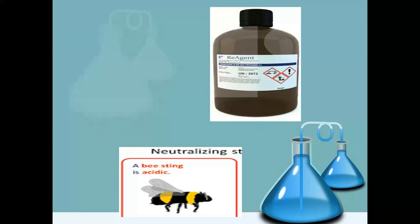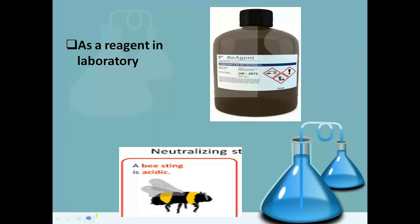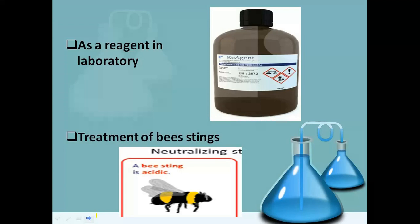Next use is as a reagent in the battery. Battery میں بہت سے chemical reactions میں calcium hydroxide as a reagent استعمال ہوتا ہے۔ Reagent وہ ہوتا ہے جو reaction کروانے میں help کرتا ہے۔ The next use is the treatment of bee sting. شہد کی مکھی کے کاٹنے پر اس کے sting کو neutralize کرنے اور اس کے effect کو ختم کرنے کے لیے calcium hydroxide استعمال کیا جاتا ہے۔